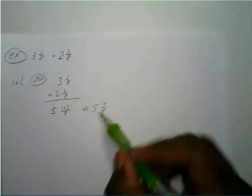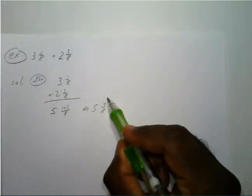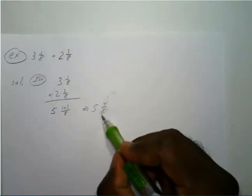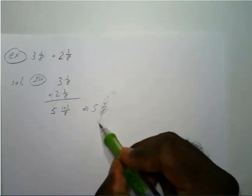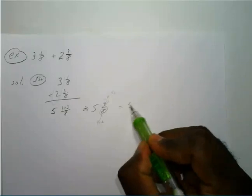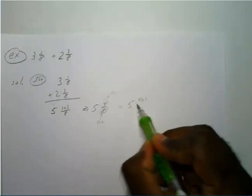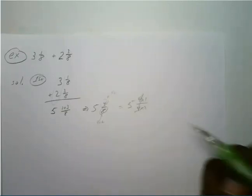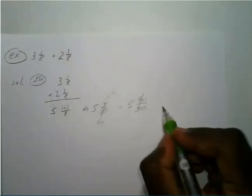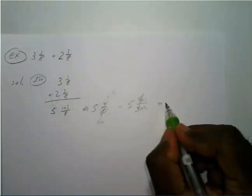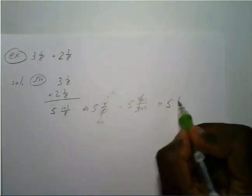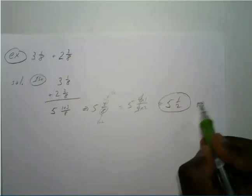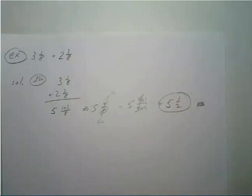That gives us five and four-eighths. To simplify, four-eighths equals four times one over four times two, and the fours cancel, leaving us with a final answer of five and one-half. Pretty straightforward when it works out like that.